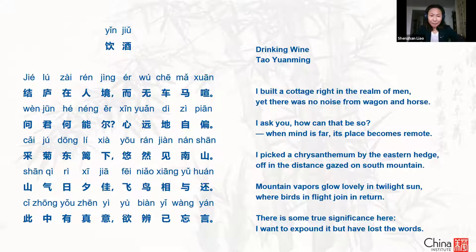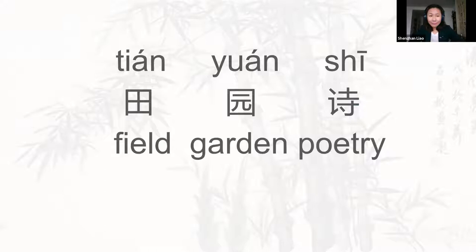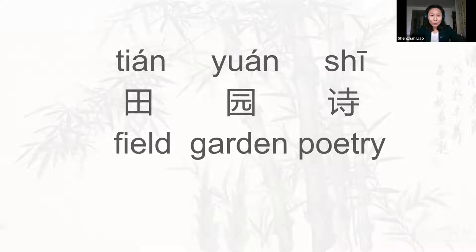Since Tao Yuan Ming, a new school of poetry — Tian Yuan Shi — was initiated. Tracing back, Tao Yuan Ming is the first best-known poet who started this genre in classical Chinese poetry. To stay away from the chaotic world, one might follow his steps to cultivate one's heart and mind, focusing on life more connected with mountains, flowers, birds, fields, gardens, and poetry.